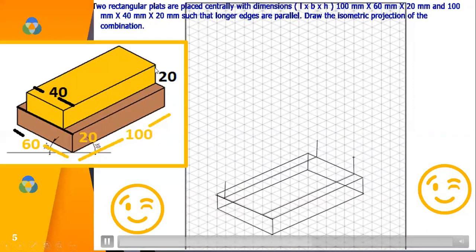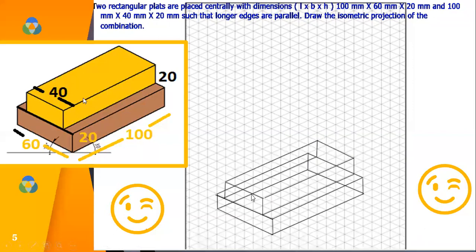From each of the corner go above 2 boxes in upward direction. Then join all the corners. So this completes the second slab.